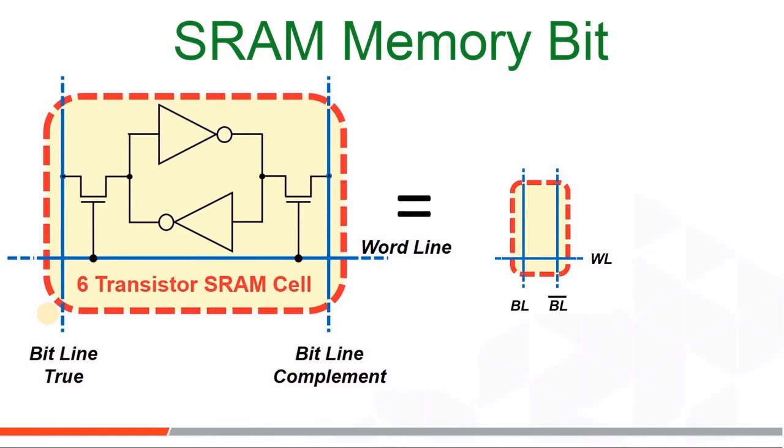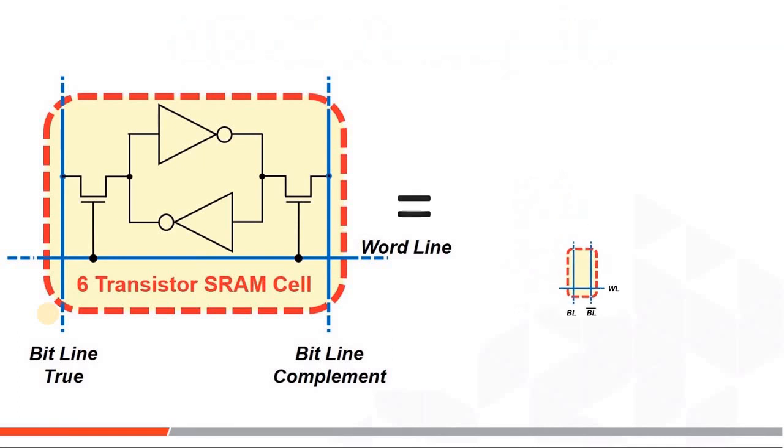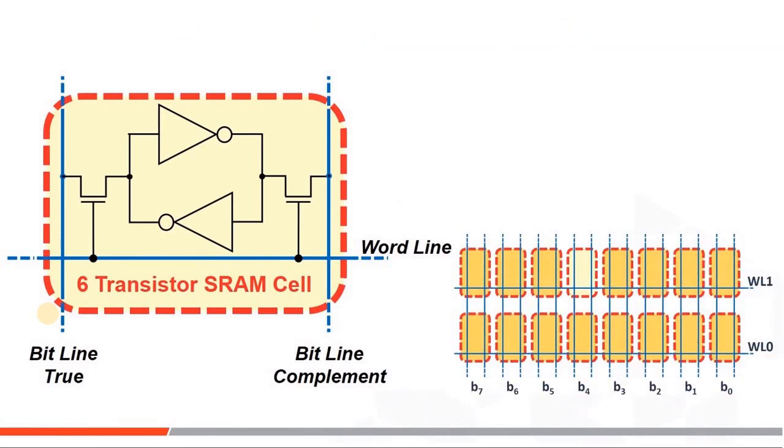This is what a common SRAM cell still looks like today. Six transistors make up one bit, and these bits are packed together in a row and column array to make bytes and words of memory as you need. These two inverters feed back on each other.